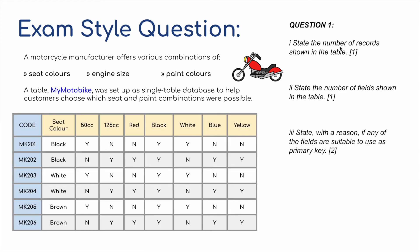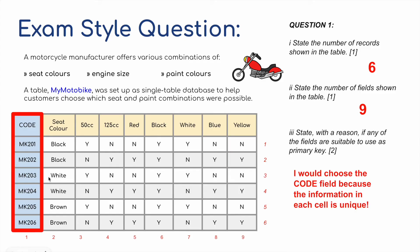The first question asks: state the number of records shown in the table. Records run horizontally, so counting them we get six records. The opposite are the fields, which run vertically down the columns. Starting with code and going across, we have nine fields. For part three: state with a reason if any field is suitable as a primary key. The code field has unique numbers in each cell, unlike the rest, so the code field should be chosen as the primary key.